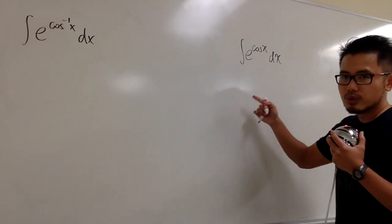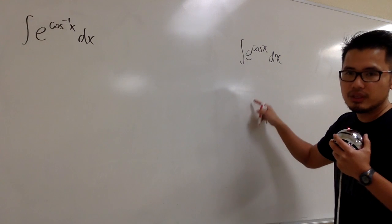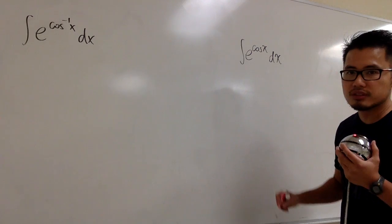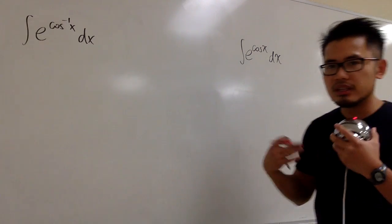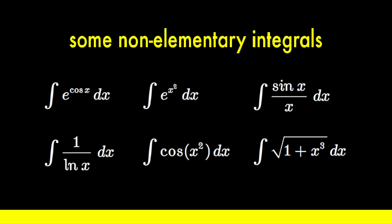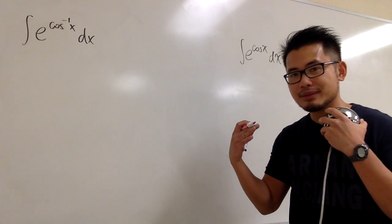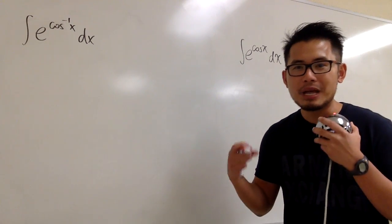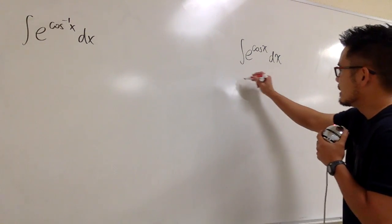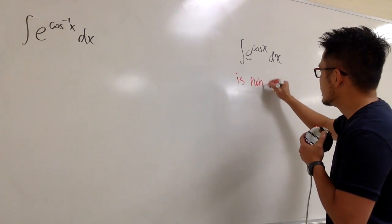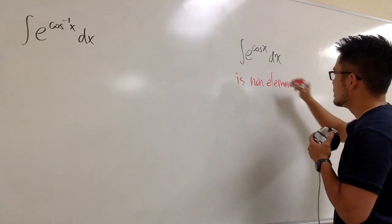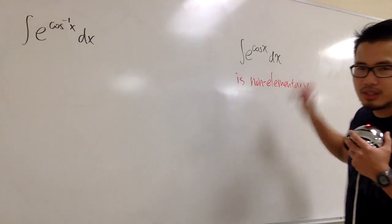Similarly, you also know integral of e to the x squared, that one has no answer. Integral of 1 over ln x, no answers. There are a few famous ones that you should know, so once you know them, you don't ever spend the time to bother with them. This right here is non-elementary. There's no answer for that, so we don't need to bother with it.